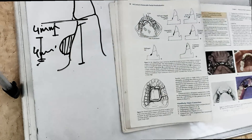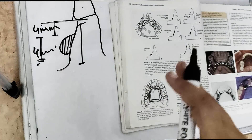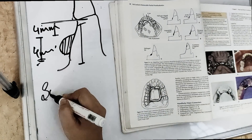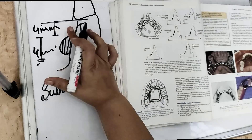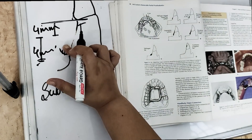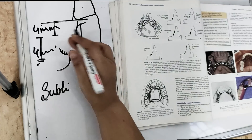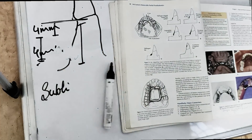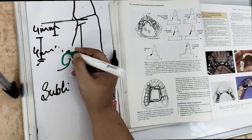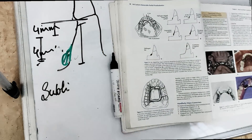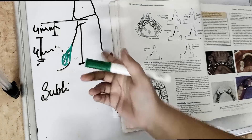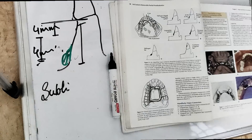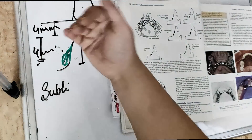If there is sufficient space of 8 millimeters vertical height to the floor of the mouth, we mostly use the lingual bar. If there is not sufficient space, we can use the modification — the sublingual bar — which is placed deep inside the lingual sulcus.